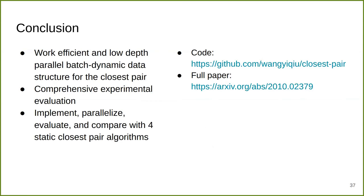So here concludes my talk. We designed a work-efficient, polylogarithmic depth, parallel batch dynamic data structure for the closest pair. We also performed a very comprehensive experimental evaluation. We open-source our code on GitHub. The code is parallel and includes the parallel batch dynamic data structure implementation as well as four parallel static closest pair implementations. Please also check our full paper on arXiv. Thank you for your attention.